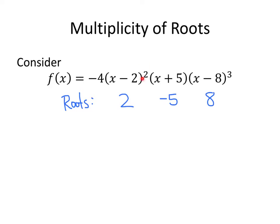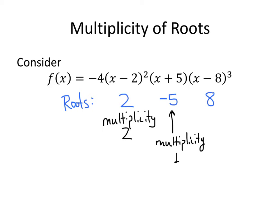Notice the powers here. The fact that x minus 2 was squared wasn't important for whether 2 is a root, but that power of 2 is important — it's what we call the multiplicity. So the root 2 has multiplicity 2. The root negative 5 has multiplicity 1, because it only appears once as a factor. And the root 8 has multiplicity 3, because there are three factors of x minus 8.